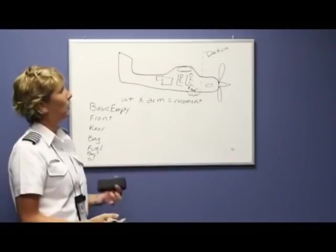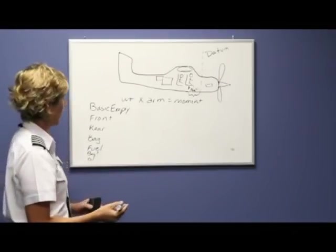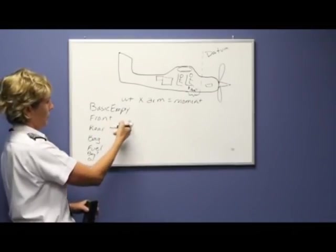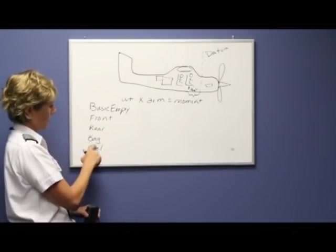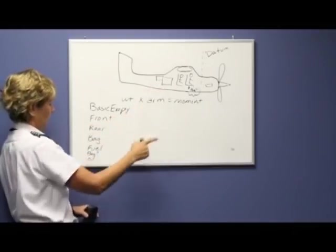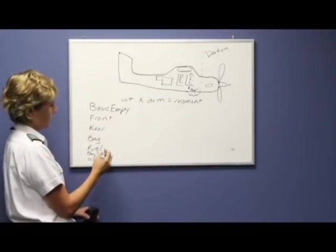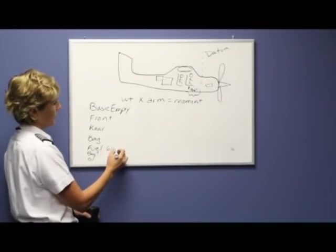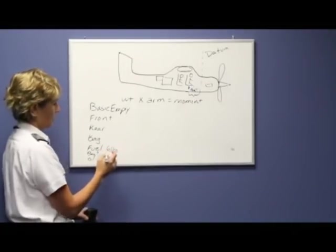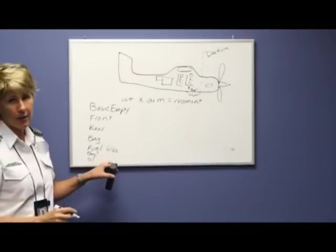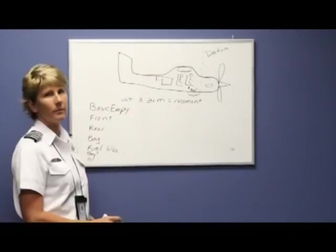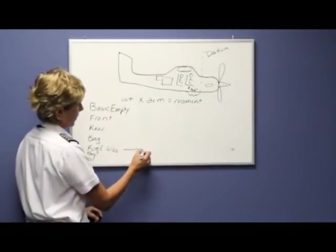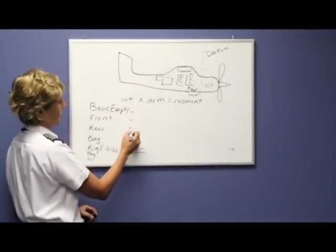Then the front seat passengers—if you have two people, you add the weight together and put that there. Rear, same thing. Baggage compartment, whatever you put in there. And then your total gallons. Remember that your fuel weighs six pounds per gallon, so don't put the number of gallons there, you have to put the weight there because it's a weight category. What we are after is the total weight, so we're going to add up all of these items and get the total weight.